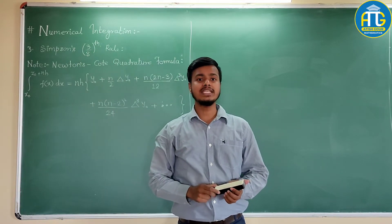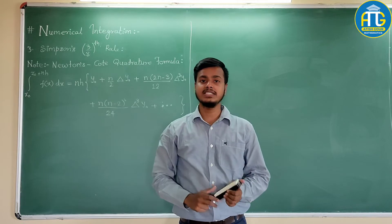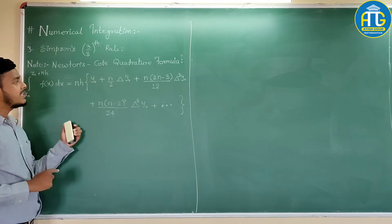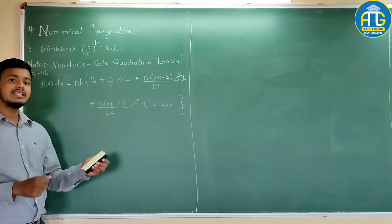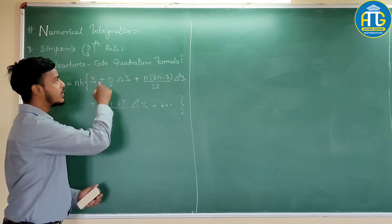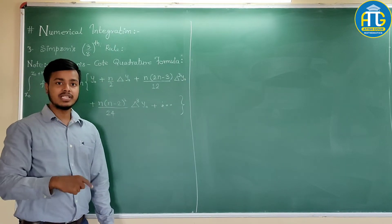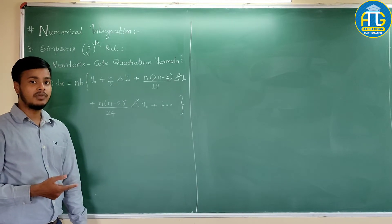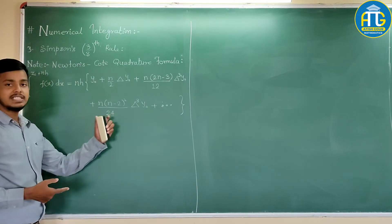So without wasting time let us start with this. So in Simpson's three-eighth rule, first of all we will derive the formula, and just like the Simpson's one-third rule, we are going to make use of Newton's Cotes quadrature formula to derive the Simpson's three-eighth rule formula with the help of this.